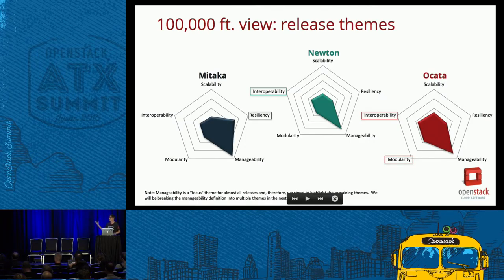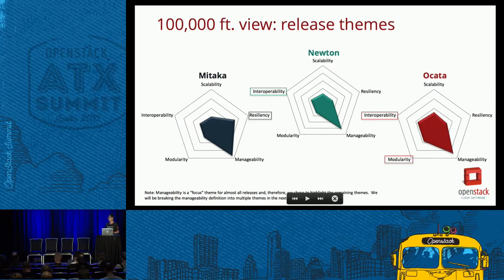Looking into Ocata, that obviously has the most potential for change being two releases forward. You can see scale increases slightly as well as modularity increases. There's been a lot of focus from the PTLs on wanting to take their code base and make it more modular — it always seems to be more of a forward-looking statement versus something they're working on right now.